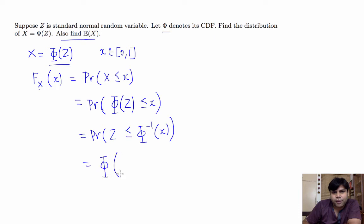So Phi of Phi inverse x is the result, and the value that we want to get if we apply Phi to Phi inverse x will be x. So what we have here is the following: whenever x is between 0 and 1, the value of the CDF of X evaluated at little x is x, which tells us that the PDF of X is 1 when x is between 0 and 1, and 0 otherwise.